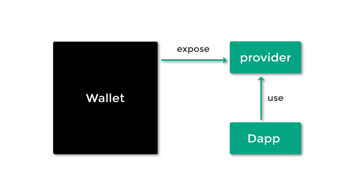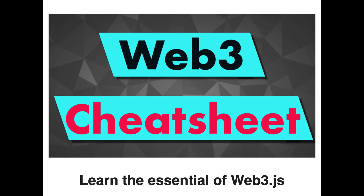Typically, an Ethereum wallet will expose a provider object as a global object in JavaScript. So in your decentralized application, you will test if you find this provider object exposed. If it exists, you will use it to instantiate Web3, and by doing so, you will connect to the Ethereum blockchain using the connection of the user's wallet. By the way, if you're interested in Web3, make sure to grab my Web3 cheat sheet — link in the description.